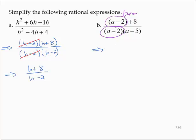So we cannot remove the a minus 2s. Instead, all we can do is combine like terms in the numerator. So we have a minus 2 plus 8, that's a plus 6. And in the denominator, we have a minus 2 by a minus 5. Nothing can be removed. That's the simplified form.